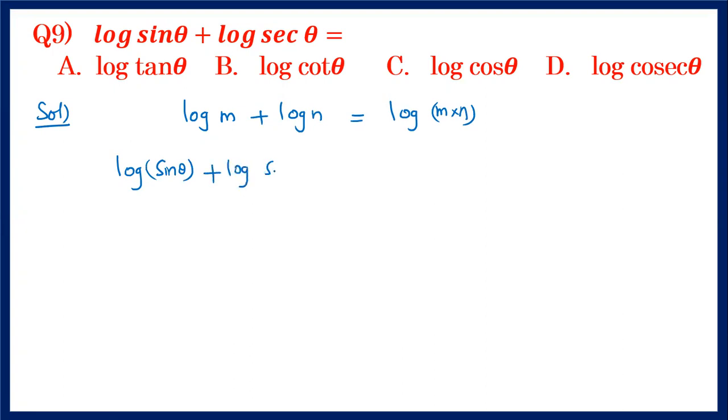So log m plus log n is log m times n. According to this, this is log sine theta into secant theta. In trigonometry, we know that secant theta is the reciprocal of cos theta.